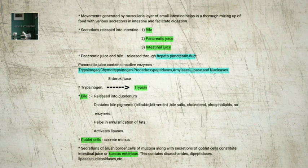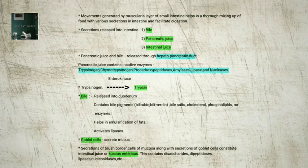Trypsinogen is activated by an enzyme, enterokinase, secreted by the intestinal mucosa, into active trypsin, which in turn activates the other enzymes in the pancreatic juice. The bile released into the duodenum contains bile pigments bilirubin and biliverdin, bile salts, cholesterol, and phospholipids but no enzymes. Bile helps in emulsification of fats — that is, breaking down of fats into very small micelles. Bile also activates lipases. The intestinal mucosal epithelium has goblet cells which secrete mucus.